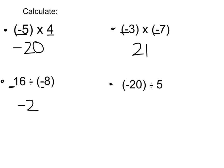Lastly, I have negative 20 divided by 5. Well, 20 divided by 5 is 4. I have a negative and a positive, so I have different signs, so my answer is negative.